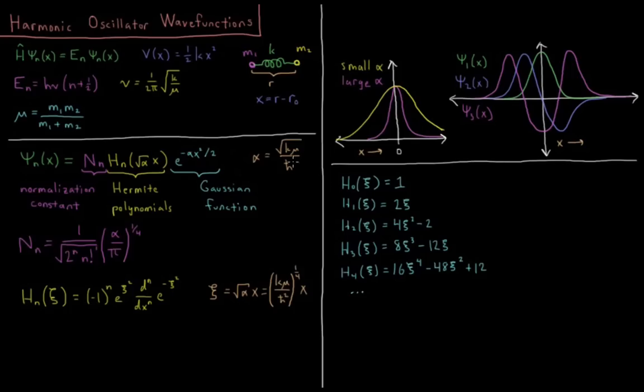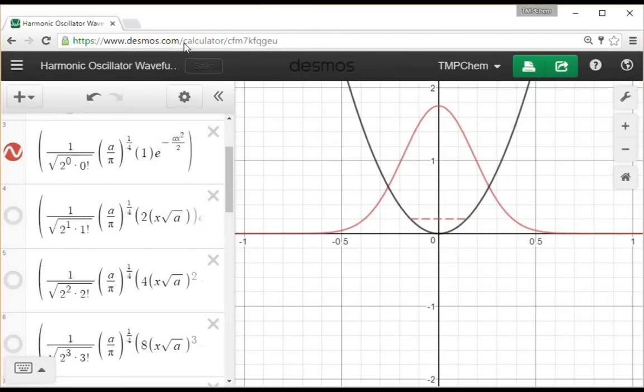So our psi 0 is a Gaussian times a constant times a constant, because the zeroth order Hermite polynomial is a constant. So psi 0 just looks like a regular old Gaussian function. Psi 1 is a Gaussian times a linear polynomial, which gives us two lobes, one positive, one negative. Psi 2 is a Gaussian times a second order polynomial with three lobes. So this gets very difficult to draw and actually show any kind of fidelity. So I'm going to look at an animation that I have on Desmos, links to this graph in the description.